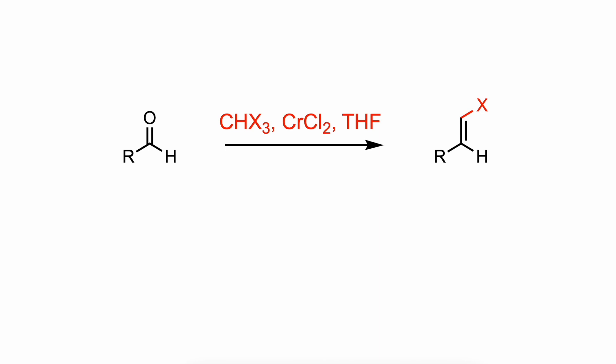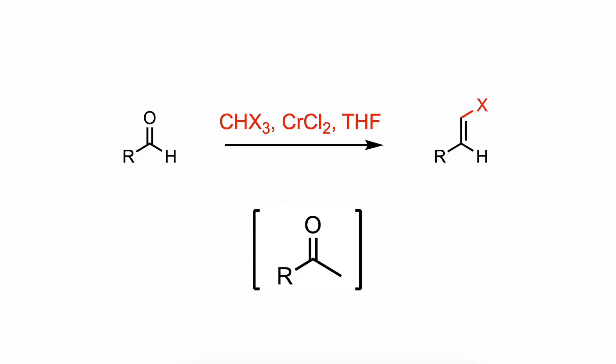One main advantage of this reaction is the E-configuration of the double bond that is formed. However, the reaction requires the use of at least 4 equivalents of chromium chloride. Aldehydes react much faster than ketones, so the chemoselective transformation of aldehydes in the presence of ketones is possible.